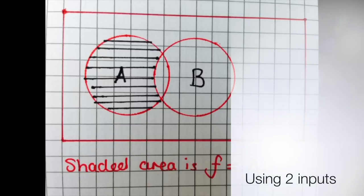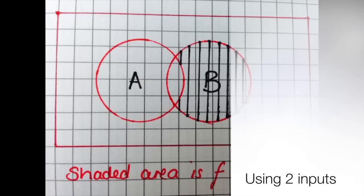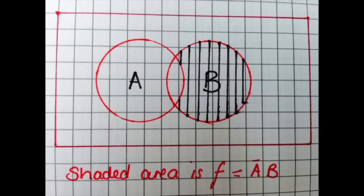In this representation of A and B, you'll notice we're looking for the expression F equals A NOT B, shaded here in horizontal lines. This can be compared to the B representation where F equals NOT A and B, shaded in by vertical lines in the B circle.